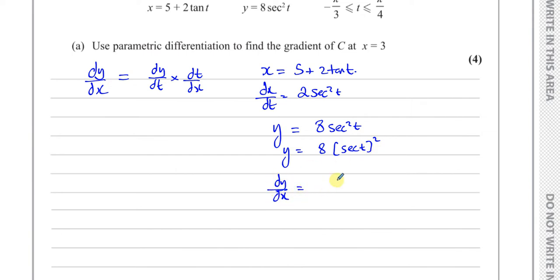Now if I differentiate this, I'm going to use the chain rule. I'm going to differentiate it as if it's like something raised to the power of something, where you multiply by the power, so 2 times 8, 16. Then you take 1 away from the power, so this is secant t to the power of 1, and then I multiply by the differential of what's inside the function. If you differentiate secant t, you're going to get secant t tan t, as we know from our formula book.